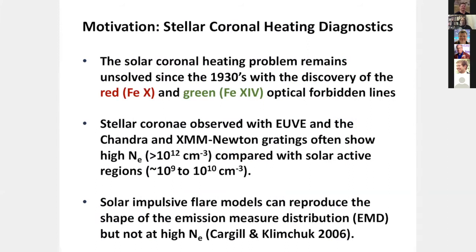I'm interested in trying to solve the solar coronal heating problem by using stars. The people who work on the Sun are very much interested in getting very high spatial resolution down to the spatial scales of magnetic strands. We're never going to do that with stars, but we can look at this unsolved problem with spectroscopy. We've learned from stellar coronae observed with EUVE, Chandra, and XMM gratings that many of the more active stars have very high density compared with solar active regions.